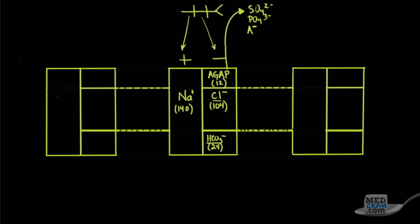The first thing to be able to do is calculate the anion gap. The anion gap is simply the sodium concentration minus the chloride and the bicarbonate. So: chloride plus bicarb, all subtracted from sodium. 104 plus 24 is 128; 140 minus 128 is 12. When you look at the relationship between bicarb and chloride, it tells you whether an acidosis or an alkalosis is occurring.